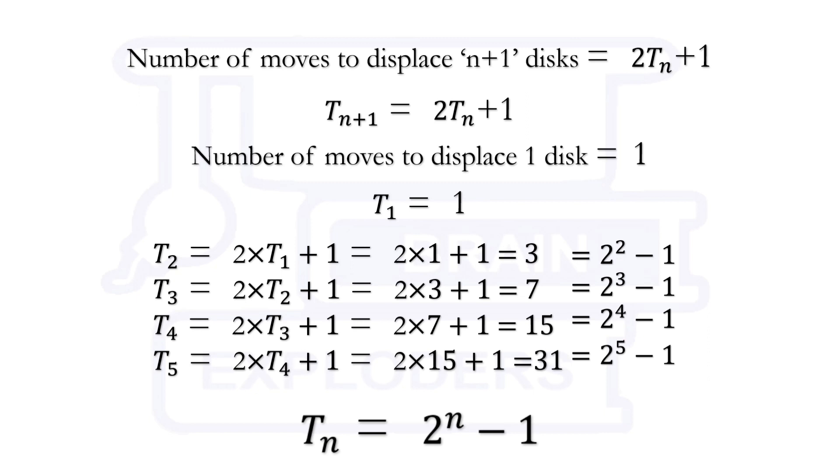Now, let's see the steps for above 3 disks. Let's do each and every step for the 3 disks. So, here is the first step, the second, the third. Also, you can see that 2 to the power 2 minus 1 that is 4 minus 1 is equal to 3 and in 3 steps, we have displaced above 2 disks and this is the fourth move.